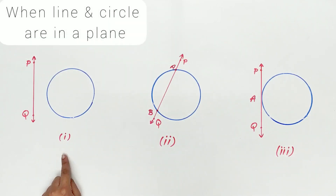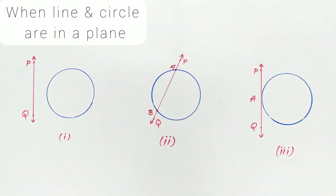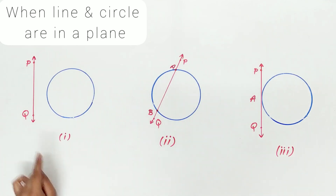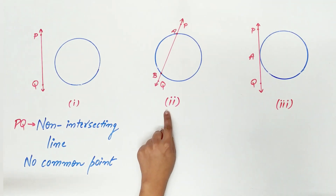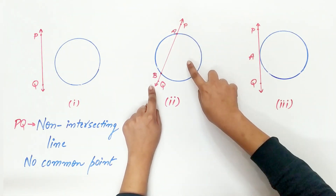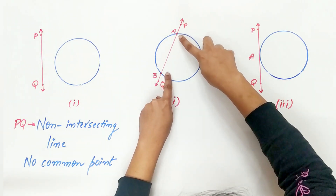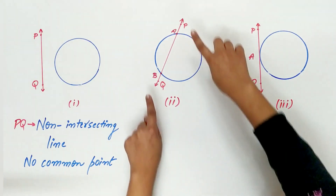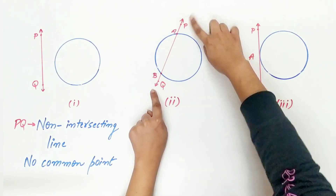Now look at the diagram. There is no common point between PQ and the circle, hence PQ is called a non-intersecting line. In the second case, PQ intersects the circle and there are two common points, A and B. Hence PQ is called a secant of the circle.